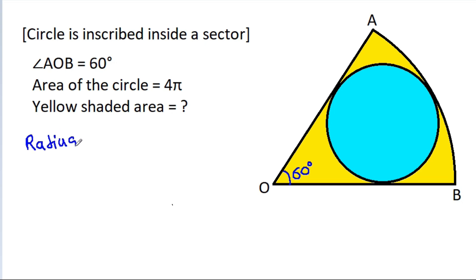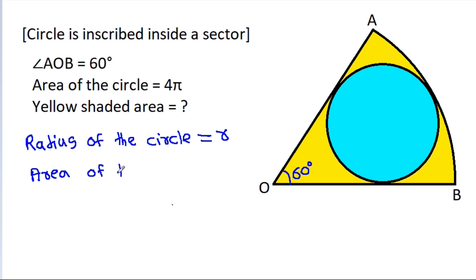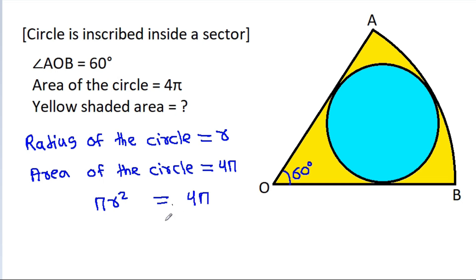Suppose the radius of the circle is equal to r. Then the area of the circle is equal to 4π, and area of the circle is πr², that is 4π. Pi will get cancelled, so r² = 4, that means r will be equal to 2.